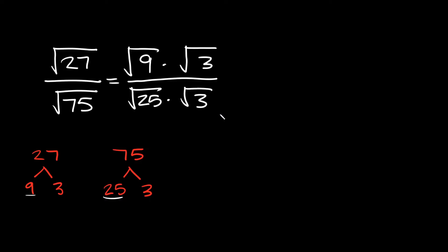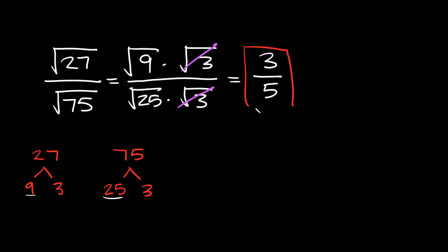Now some math magic happens because we have the square root of 3 on top and on the bottom, and if you ever have the same thing on the top and bottom, those cancel out — they go away. So all we're left with is the square root of 9 over the square root of 25. The square root of 9 is 3, and the square root of 25 is 5, so your simplified answer is 3 over 5.